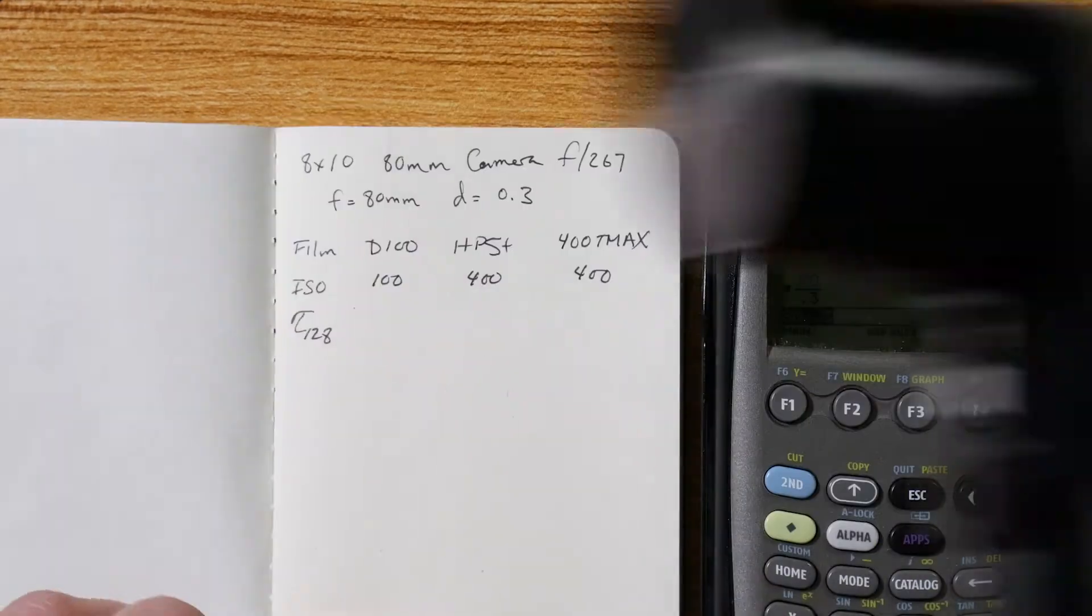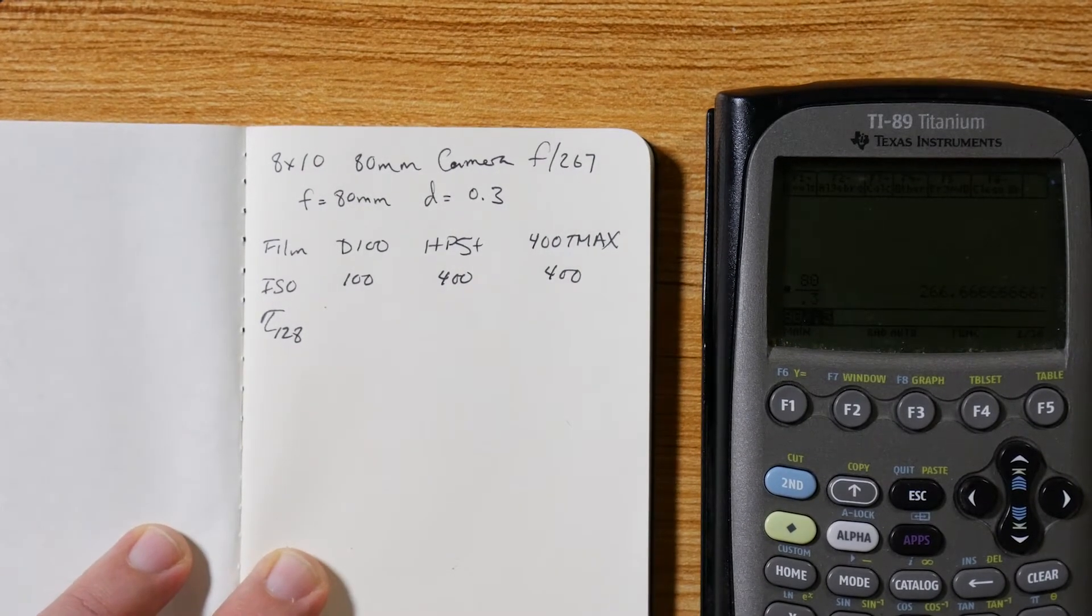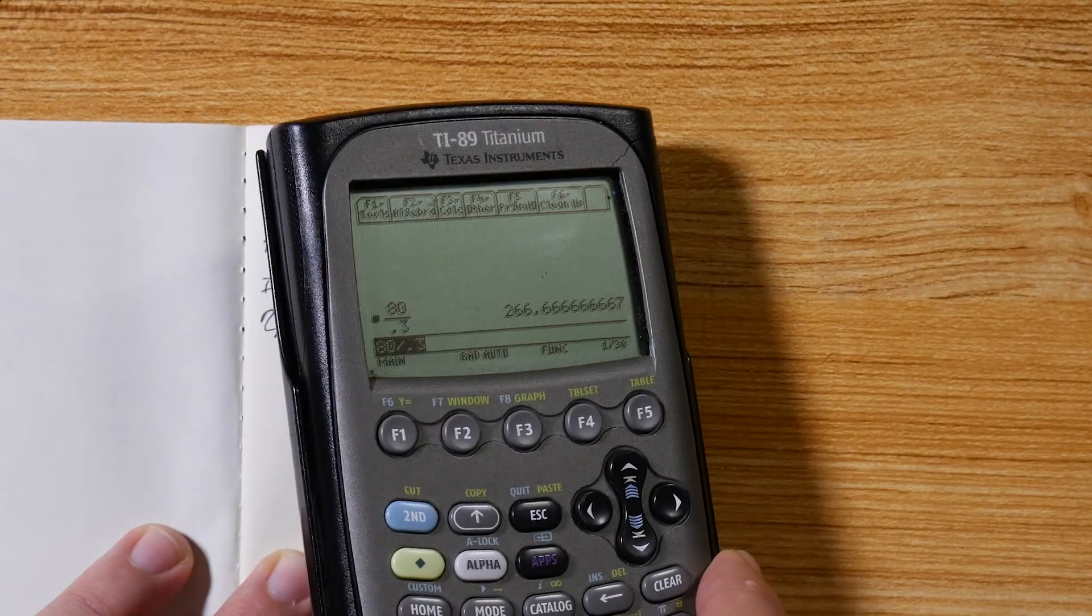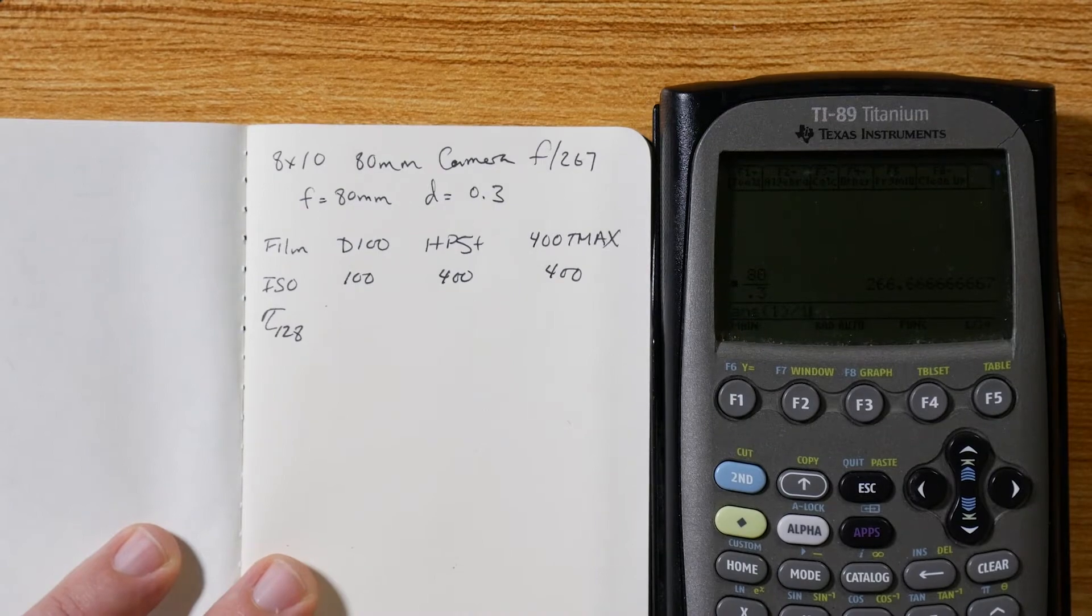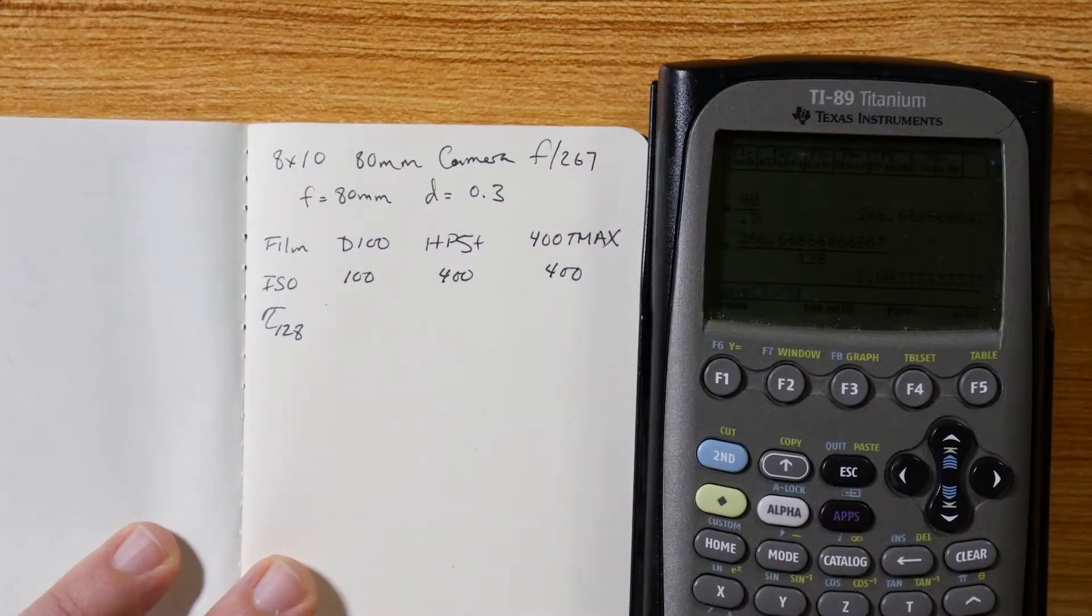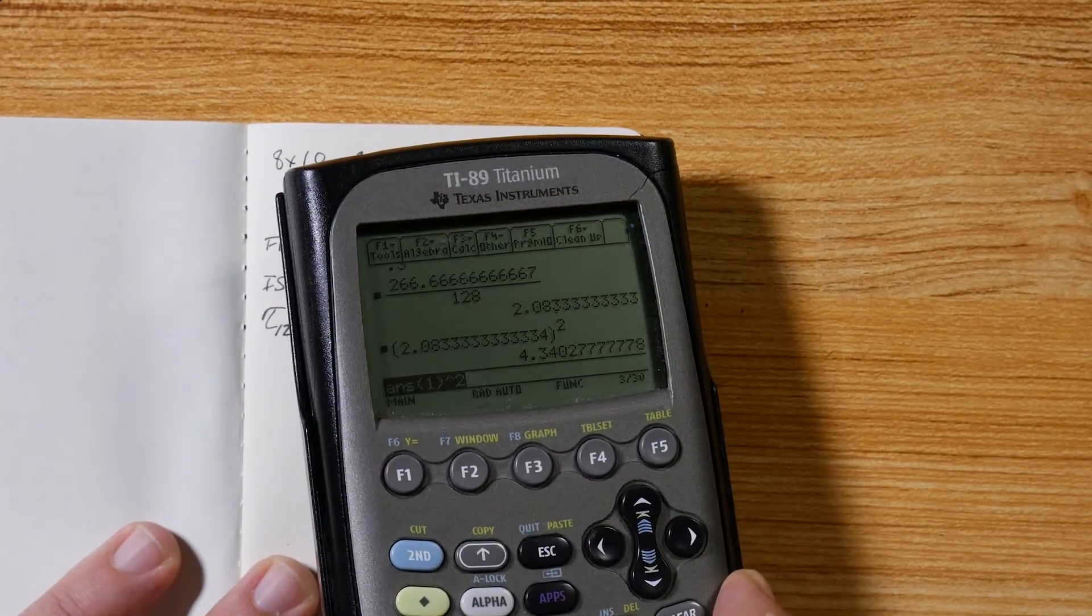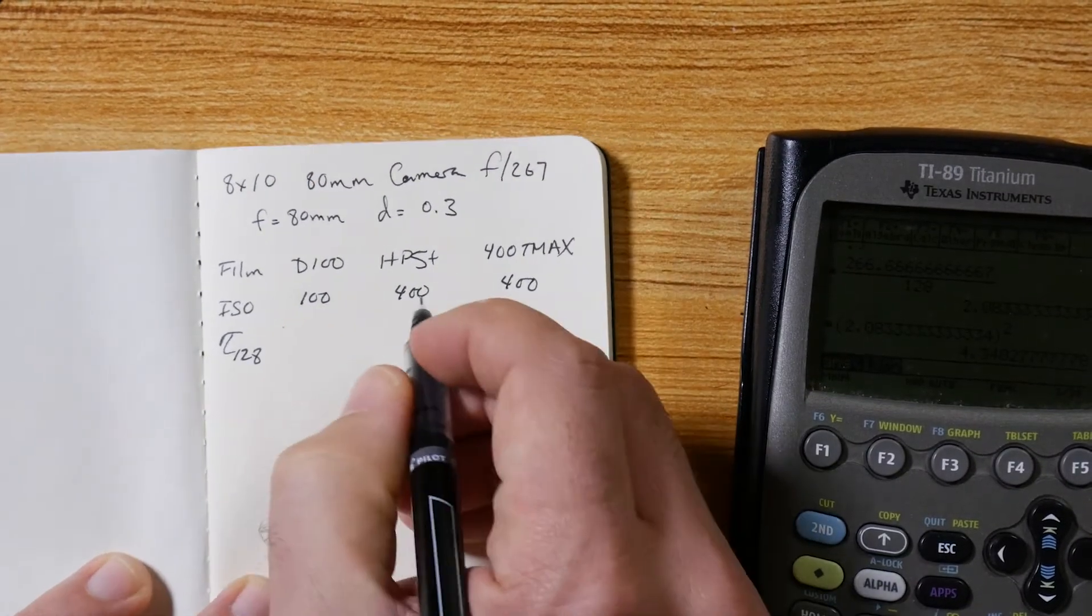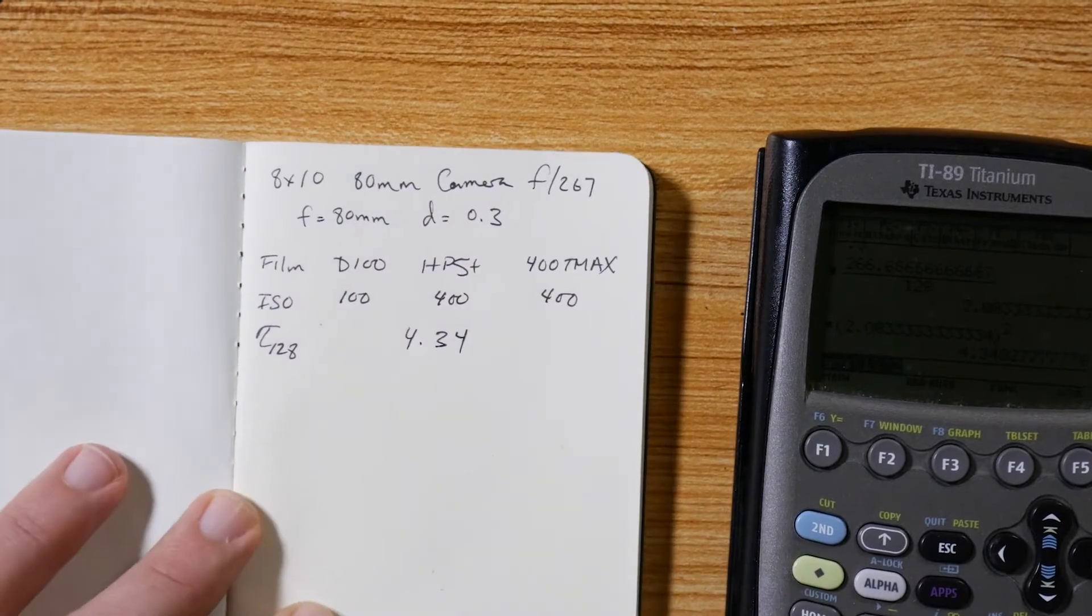So now I need my factor that's going to apply to all three films regardless of ISO, regardless of film speed. I still have my 266 stored in the calculator. Now I'm going to divide that by 128, get a new number, and take that number squared. That's my new factor: 4.340. So I'll just write 4.34 down here. That's my new factor.